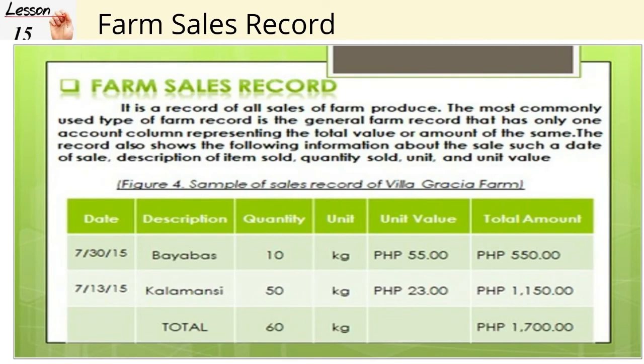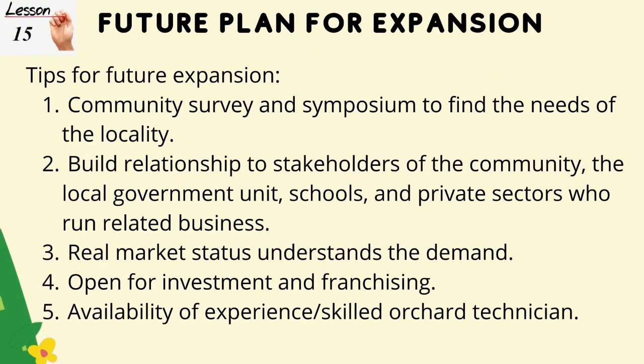Farm sales record: it is a record of all sales of farm produce — the most commonly used type of farm record — that has only one account column representing the total value. The record also shows information about the date, description of items sold, quantity sold, unit in kilograms, and unit value or price.